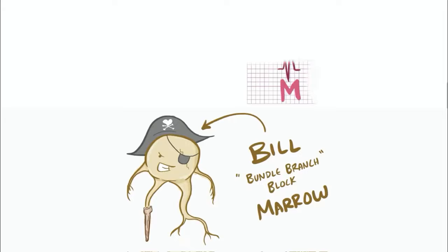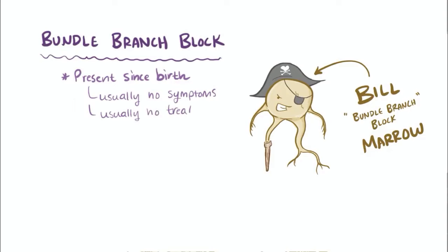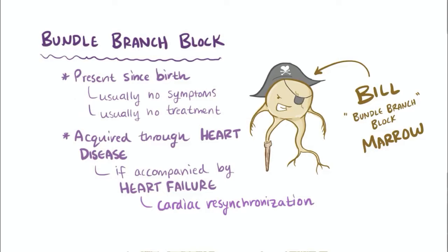Some cases of bundle branch block are present since birth and don't cause symptoms and therefore probably don't need any treatment. In a lot of cases though, the block is acquired through some other heart disease. In severe cases where the block is accompanied by heart failure, a special cardiac resynchronization pacemaker can be implanted that has electrical leads going to both the left and right ventricles, and can pace them at the same time, causing them both to contract at the same time, which helps improve cardiac function.